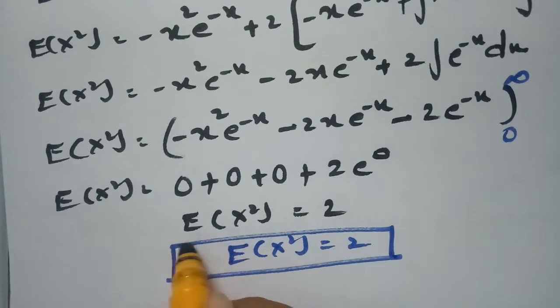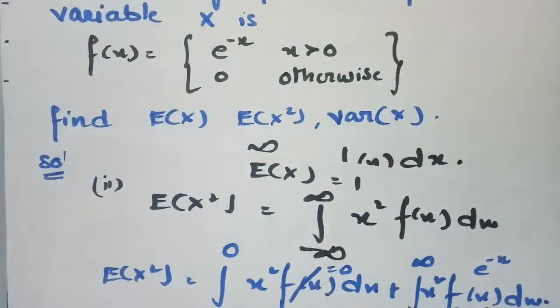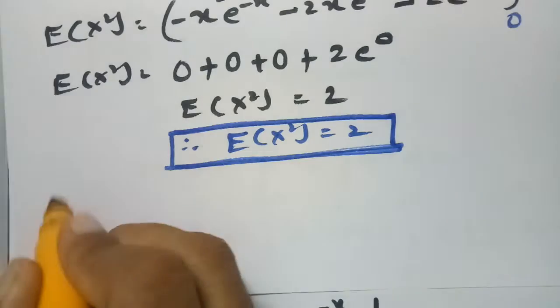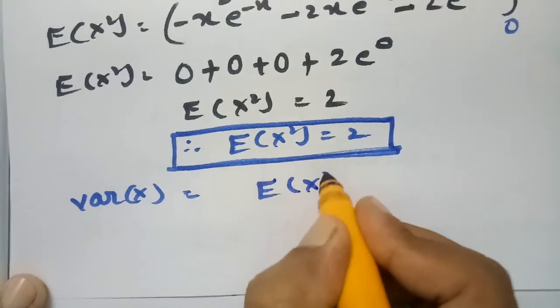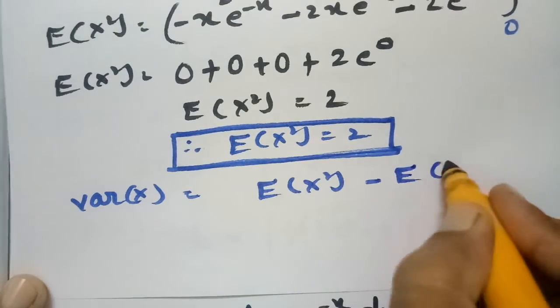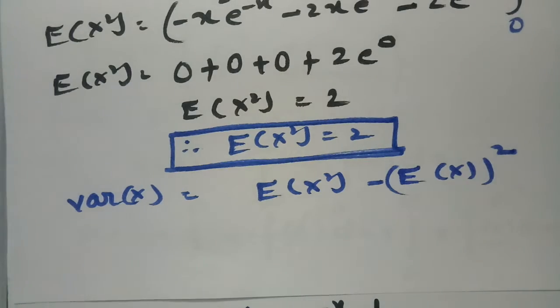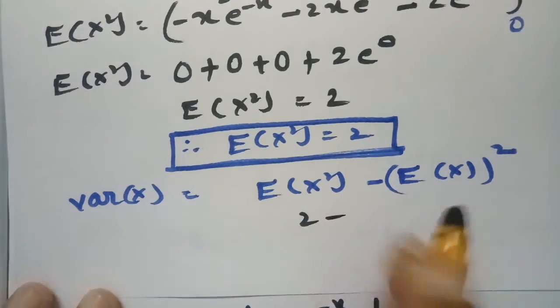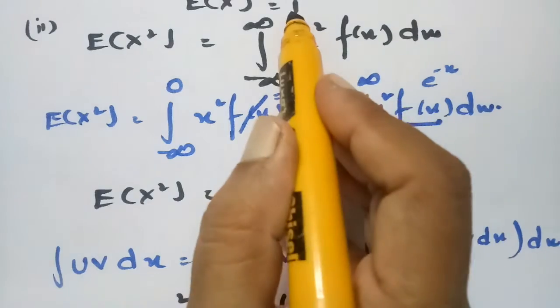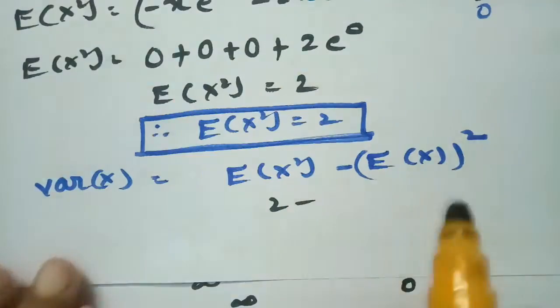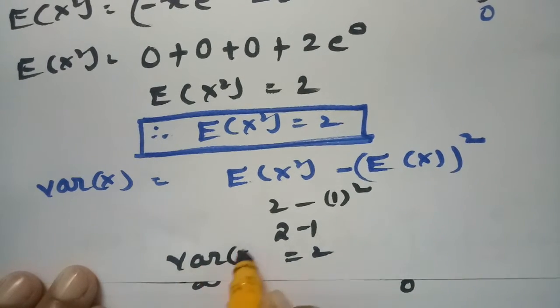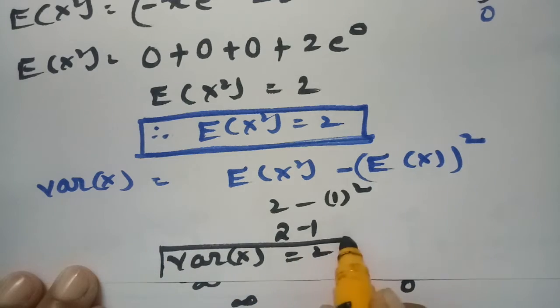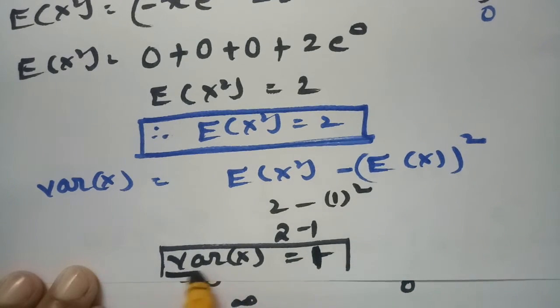The third quantity is the variance of X. Using the formula Var(X) = E(X²) minus [E(X)]², we substitute E(X²) = 2 and E(X) = 1, giving Var(X) = 2 minus 1² = 2 minus 1 = 1. Therefore the variance of X is 1.